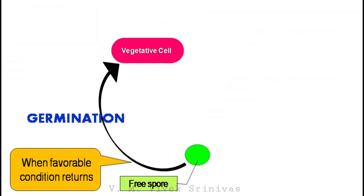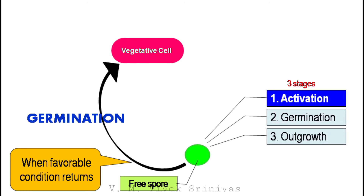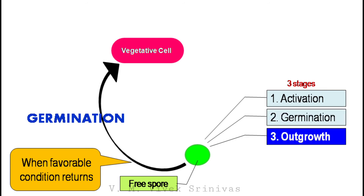The revival of the dormant spore into the vegetative cell is called germination. It happens by three stages: the activation, the germination, and the outgrowth.